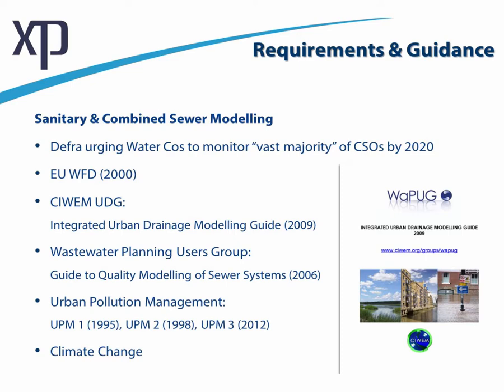There's a range of useful guidance on modeling. The CIWEM Urban Drainage Group produced a guidance document on integrated urban drainage modeling in 2009. Prior to that, the Wastewater Planner Usage Group produced a guide on quality modeling of sewer systems, providing a summary of best practice used in the UK. This complements the UPM manual — the Urban Pollution Management Manual series — and the WAPO code of practice for hydraulic modeling of sewerage systems. The UPM guidance, produced by the Foundation for Water Research, is now on its third iteration.